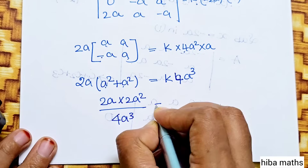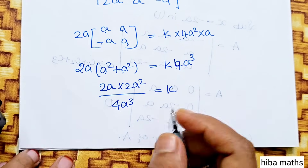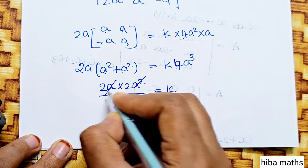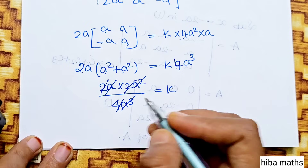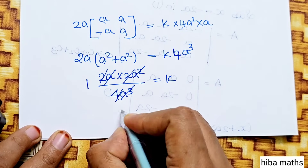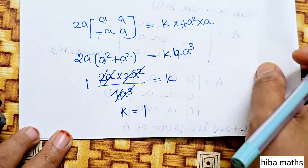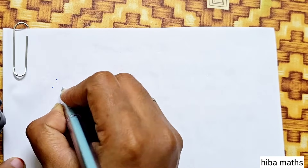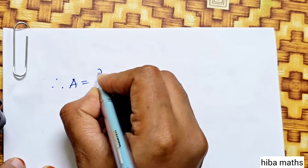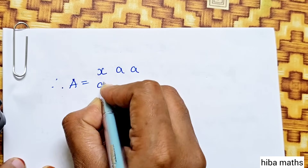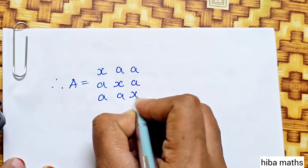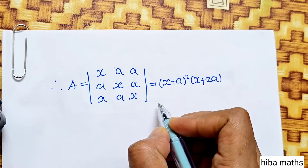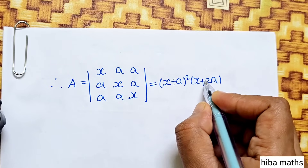Cancelling the common terms (a cubed from both sides), we get k is equal to 1. Therefore, the final result is: the determinant A with rows (x, a, a), (a, x, a), (a, a, x) equals 1 times (x minus a) whole square into (x plus 2a). Hence proved.